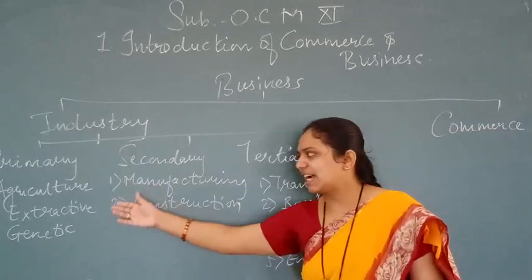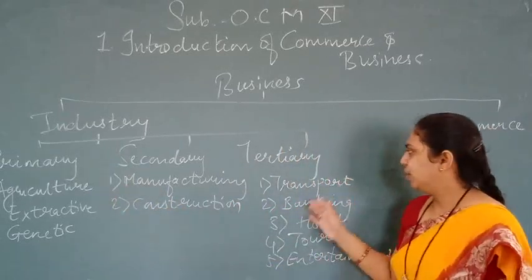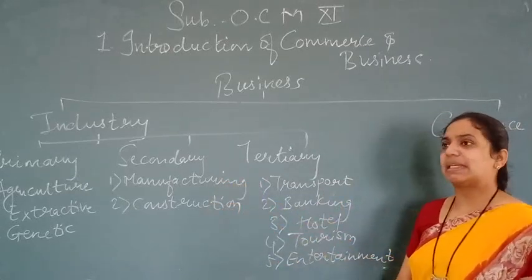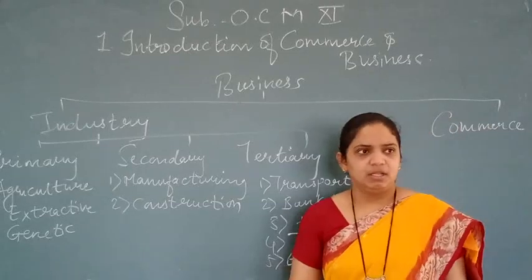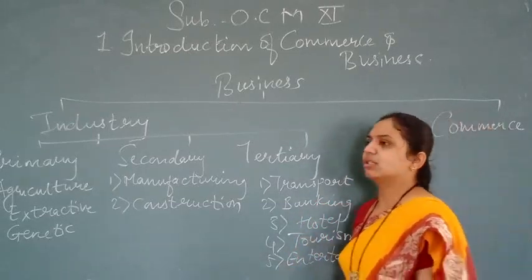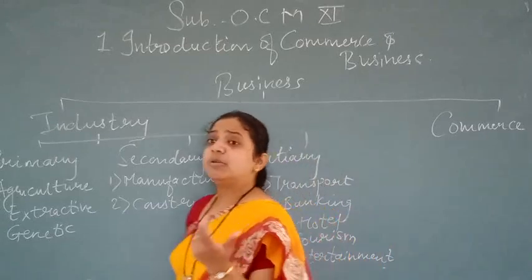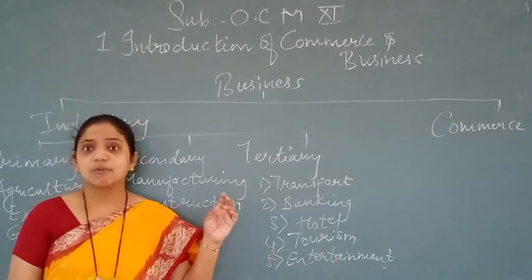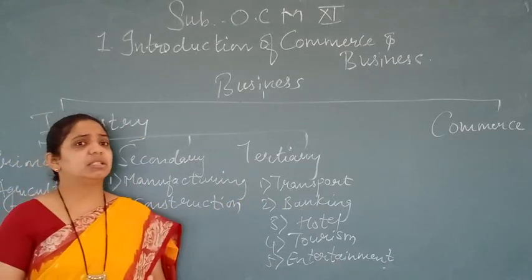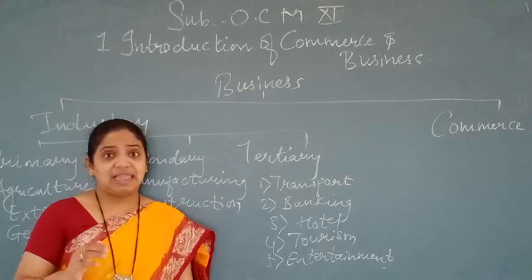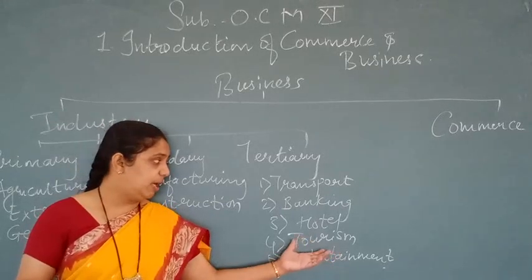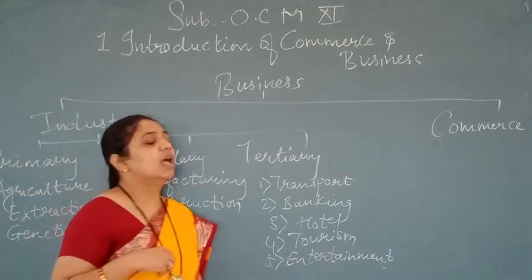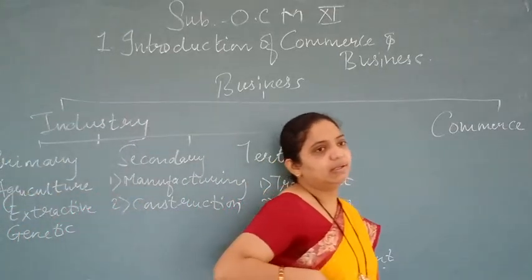For primary industries like agriculture, extractive, and genetic, you need transportation and banking. For secondary industries like manufacturing and construction, transportation and banking are most important. In modern times, hotel, tourism, and entertainment industries are also included in tertiary. Tourism industry contributes to the economic growth of the country along with hotel and entertainment industries.